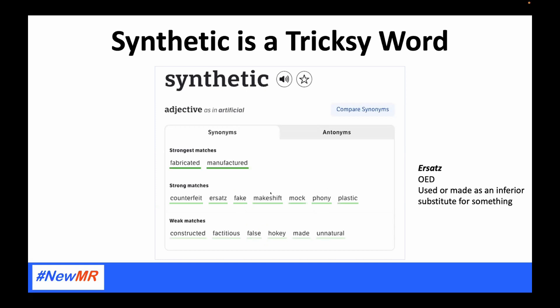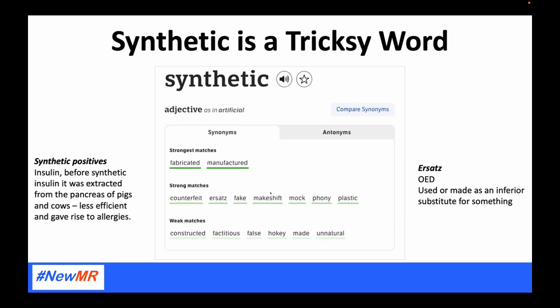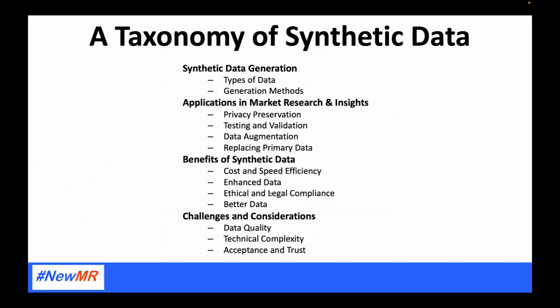I love the word 'ersatz' — the Oxford English Dictionary defines it as 'used or made as an inferior substitute for something.' That's probably quite accurate of where we are with synthetic data. But similarly, before we had synthetic insulin, it used to be extracted from the pancreas of pigs and cows — an inefficient process that gave rise to all sorts of allergies and problems. So synthetic is a curious term.